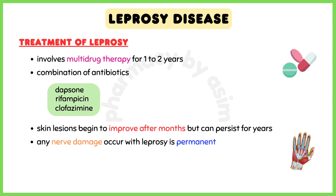Treatment of leprosy usually involves multi-drug therapy for 1–2 years. Treatment may include a combination of antibiotics like dapsone with rifampicin and clofazamine. With appropriate treatment, skin lesions begin to improve after months but can persist for years. However, if any nerve damage occurs with leprosy, this is permanent.